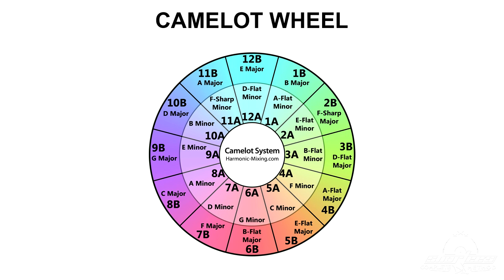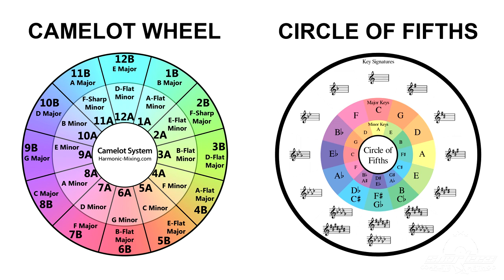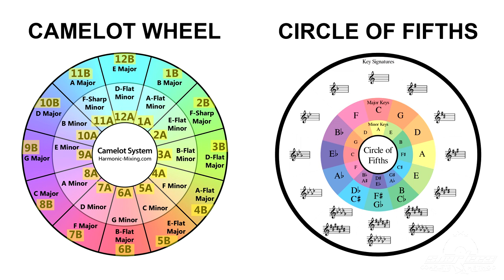When you first look at the Camelot wheel, you'll notice it looks almost exactly like the circle of fifths, with 12 key steps around the circle and each of those keys being a fifth step from the last. The difference is that the key positions on the Camelot wheel are rotated five steps counterclockwise to the left, so instead of starting with C major at the top like the traditional circle of fifths, we have E major at the top. You'll also notice that each key in the Camelot wheel is assigned an alphanumeric code ranging from 1 to 12. The reason the Camelot wheel rotates the circle of fifths is so that the keys assigned 12A and 12B are at the top, and that way it looks just like a clock with the numbers moving around the circle clockwise.